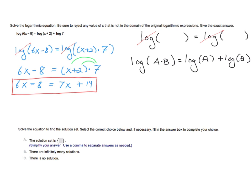So I'll write the thing over again. We have six x minus eight is equal to seven x plus 14. I guess what I'll do is subtract six x from both sides, which gives us negative eight is equal to x plus 14. And I guess I'll subtract 14 from both sides.